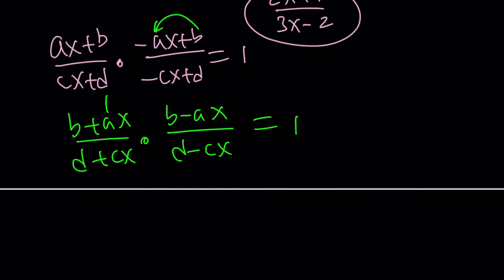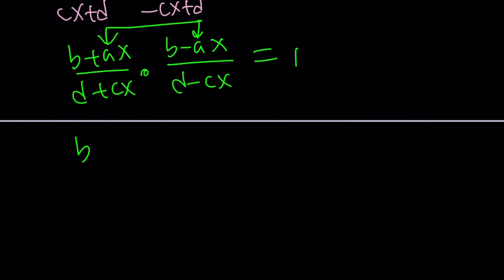b plus ax over d plus cx and then b minus ax over d minus cx equals 1. That's nice. Now we can multiply these. That's going to give us b squared minus a squared x squared from difference of two squares, which is a very common formula. And the denominators will give us d squared minus c squared x squared, and we want this to be 1. Obviously, you don't want d squared minus c squared x squared to be 0.